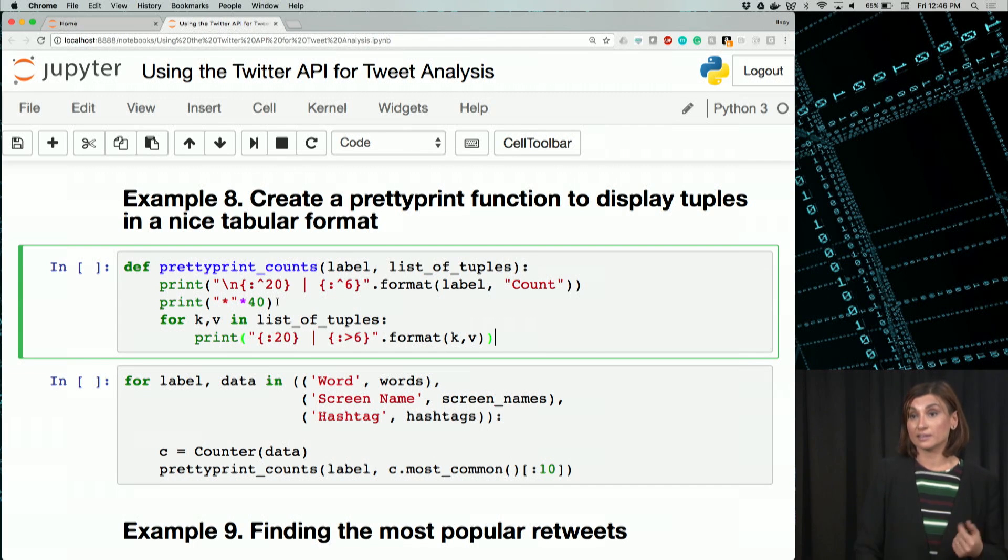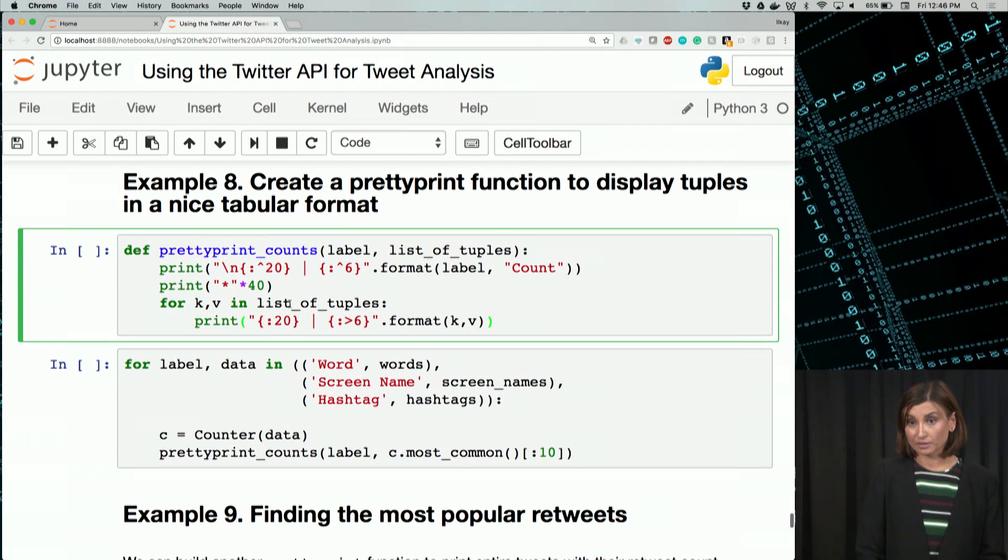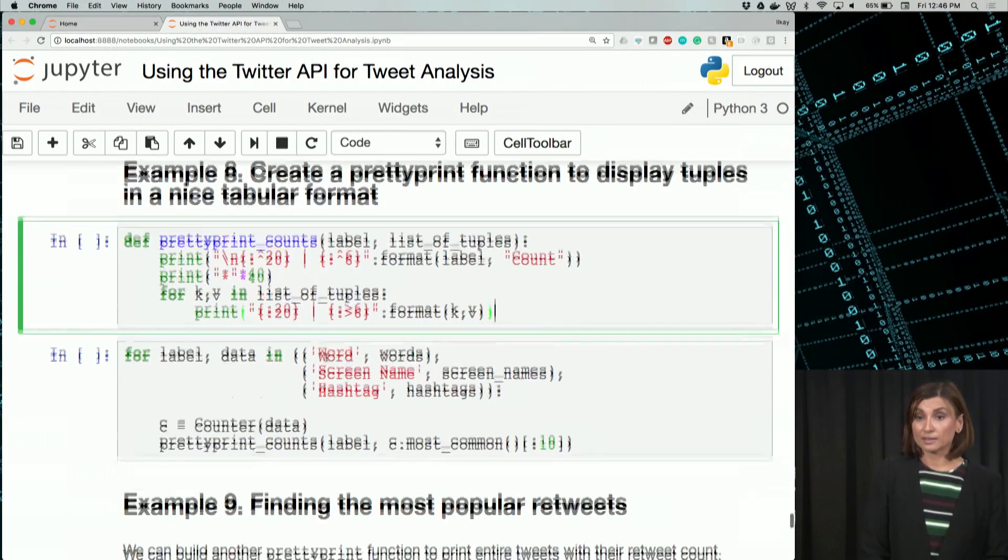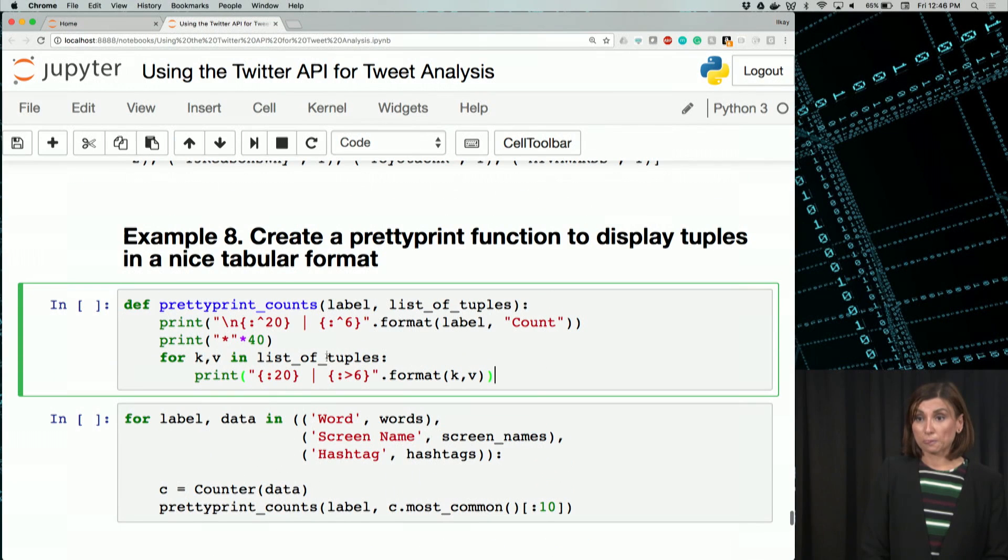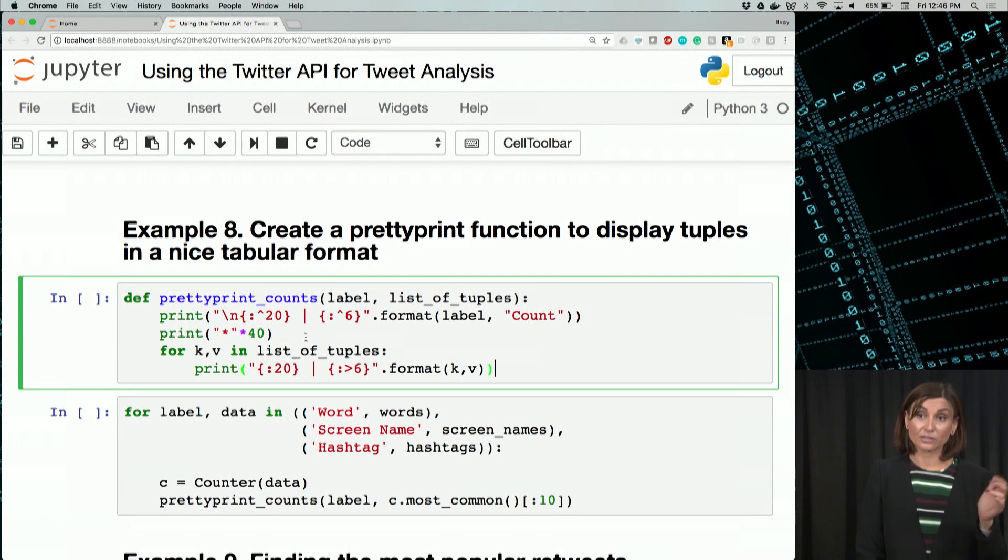It takes, let's say here, a list of tuples and a label and writes out a nicely formatted table of data objects or data structures. In the first line, we create the labels on top. The second line will give us 40 stars. Exactly 40. Pad it nicely.